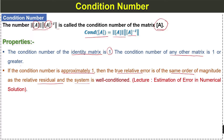Regarding the relative error and the residual — in an earlier lecture we have already learned about this. The lecture name is 'Estimation of Error in Numerical Solution.' I will provide the link in the video description so you can watch and understand how to find the true relative error and the relative residual. So the second property is: when the condition number is approximately 1, the system is well conditioned.